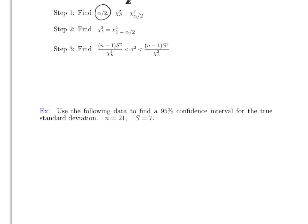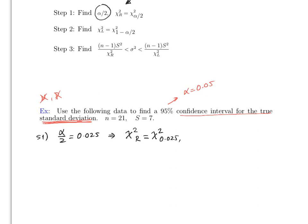Let's do an example. Find a 95% confidence interval for the standard deviation using the following data. A 95% confidence interval means alpha is 0.05. This is asking for sigma, not mu and not p. The given information: alpha is 0.05, s is 7, and n is 21. Step one: alpha divided by 2 equals 0.025. Then find chi-square right — chi-square of 0.025 with degrees of freedom n minus 1, which is 20.